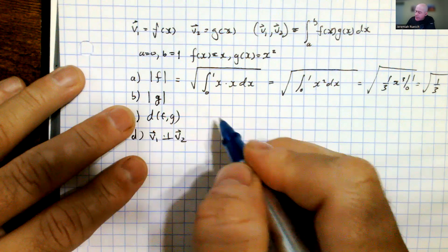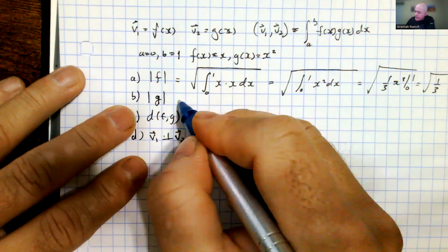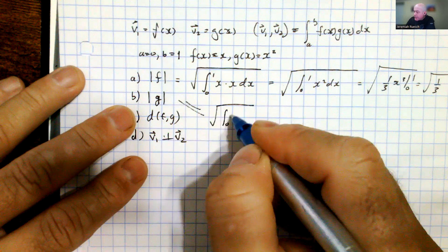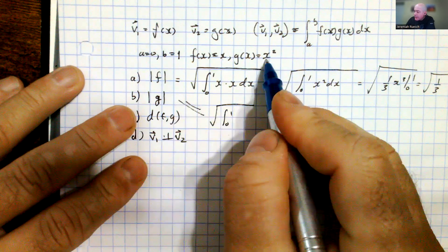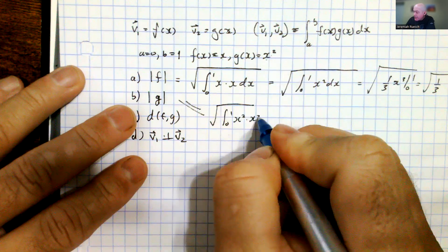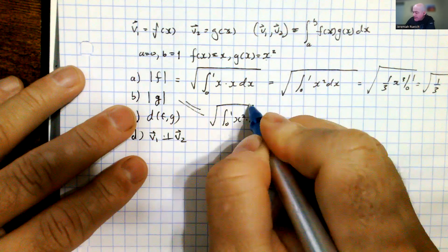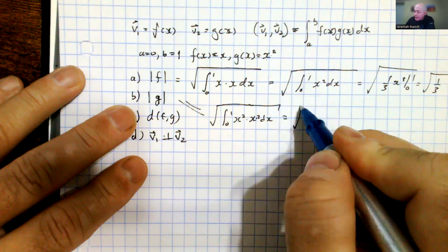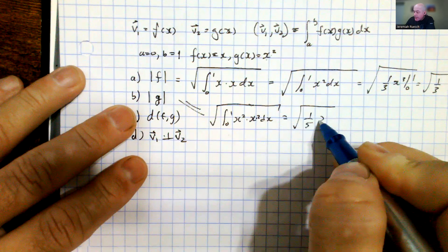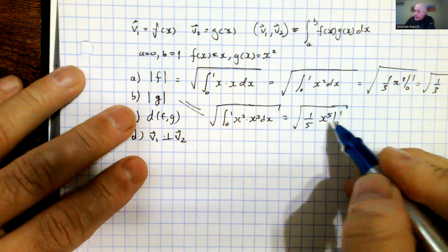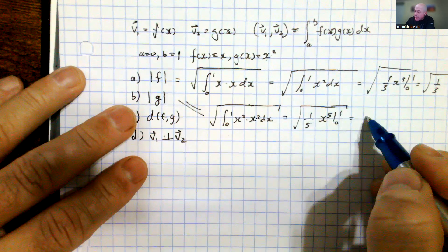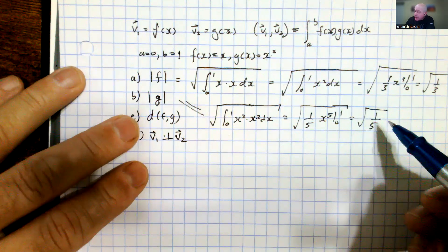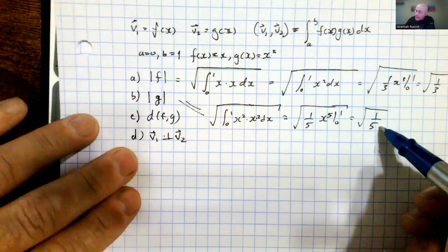Now let's look at the norm of g. This is going to be the same setup, from 0 to 1, except g equals x squared, so it's x squared times x squared dx, which is x to the 4th. Integrating gives x to the 5th over 5, and plugging in we get the square root of 1/5. That's the length of that vector.